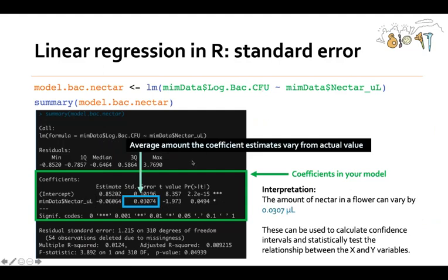Moving on, what is the standard error? The standard error represents the average amount the coefficient estimates vary from the actual value. So you can interpret this value, 0.03074, as the amount of nectar in a flower and how much it varies. So the amount of nectar in a flower can vary by 0.307 microliters. And why would you want to know this? Well, these can be used to calculate confidence intervals and statistically test the relationship between x and y variables.